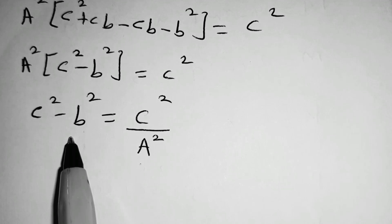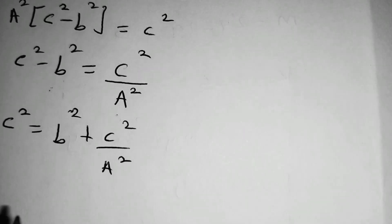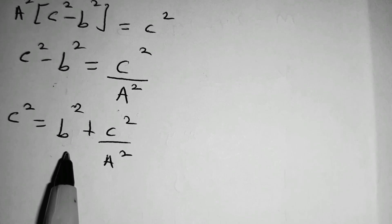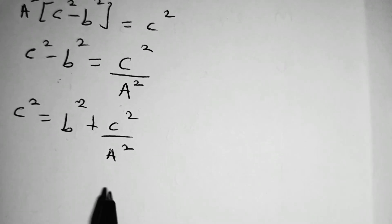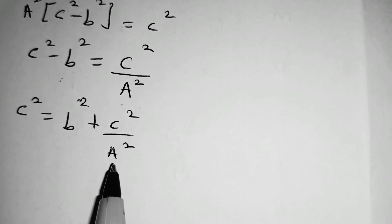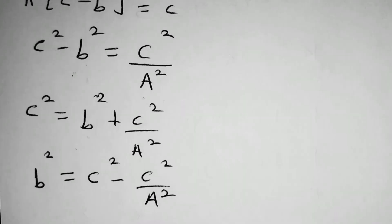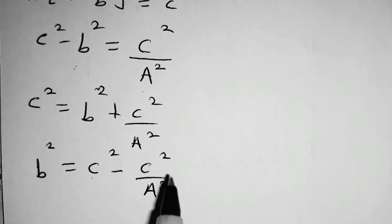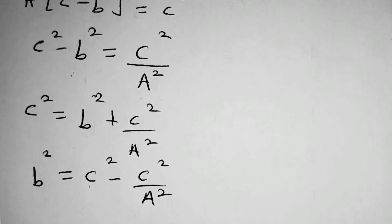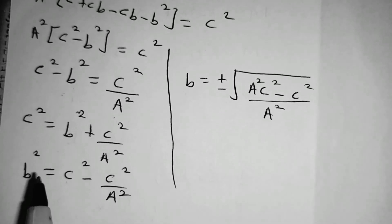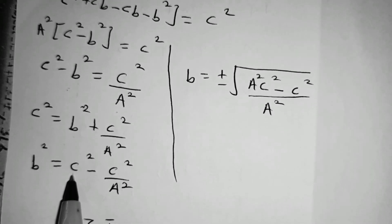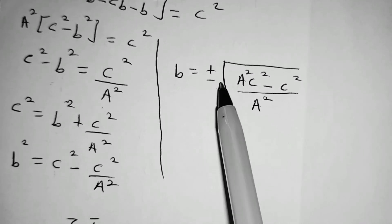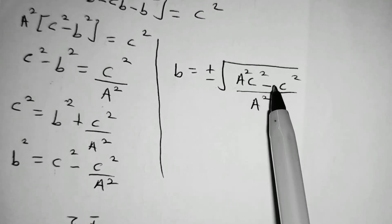We add B squared to both sides, so we shall be left with C squared on the left hand side, and on the right hand side we shall have B squared plus C squared over A squared. Then we subtract C squared from both sides. When we do that, we shall have B squared is equal to C squared minus C squared over A squared. Then we take the square root of both sides to obtain the value of B.